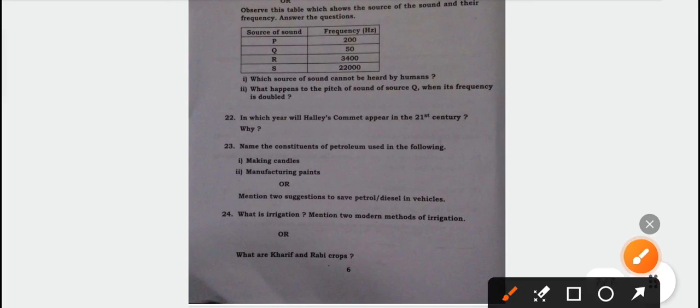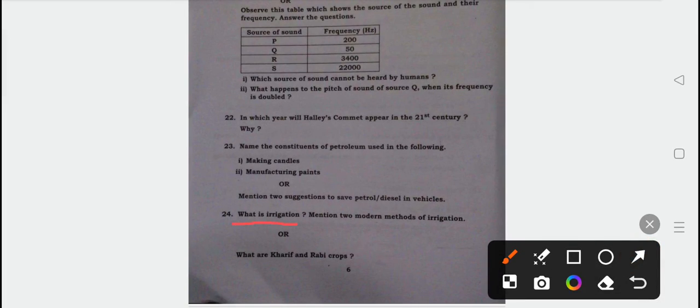Irrigation: The supply of water to crops at regular intervals is called irrigation. Two modern methods of irrigation are drip and spraying irrigation. The crops which are grown in the rainy season are called kharif crops. The crops which are grown in the winter season are called rabi crops.